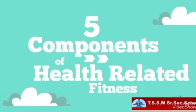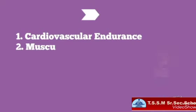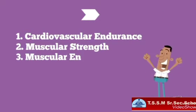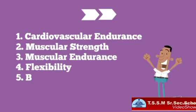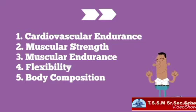Five components of health-related fitness — these are all separate parts. The first is cardiovascular endurance, the second is muscular strength, the third is muscular endurance, the fourth is flexibility, and the last one is body composition.